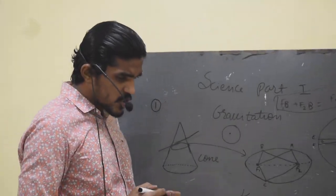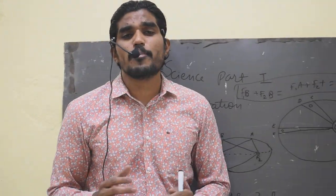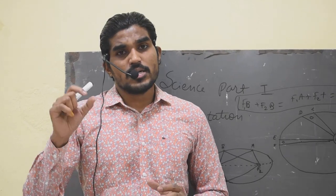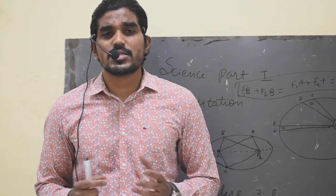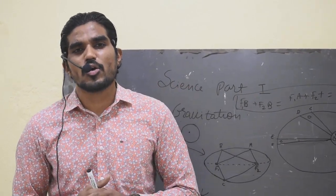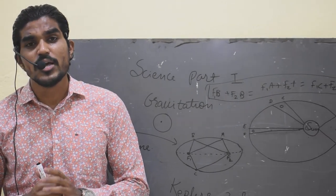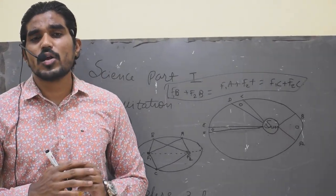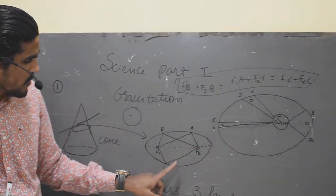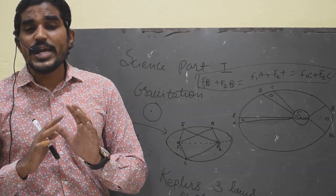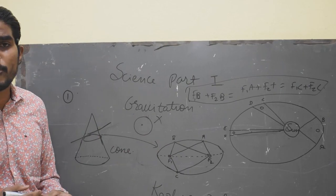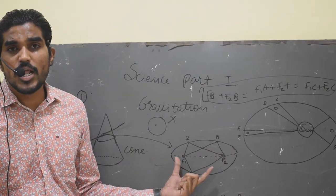Kepler's first law deals with how a planet revolves around the sun. We always say that the Earth is revolving around the sun in a circular orbit. But here we have to make a correction: the planets don't revolve around the sun in a circular orbit. Instead, they revolve in an elliptical orbit.